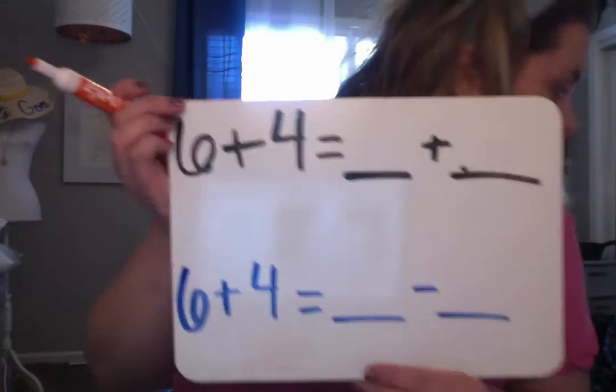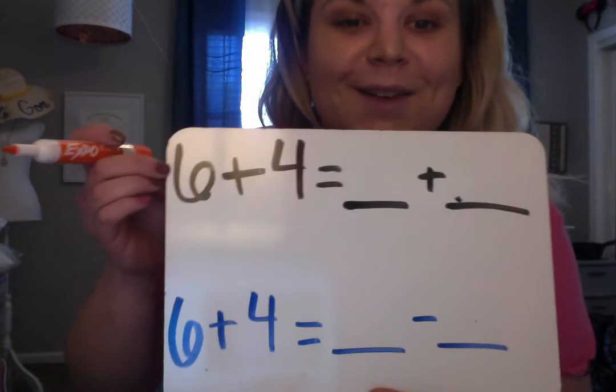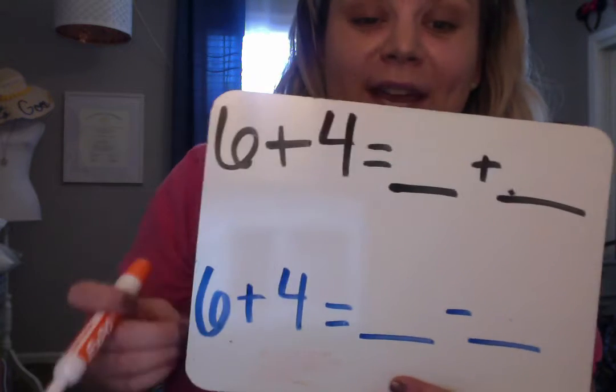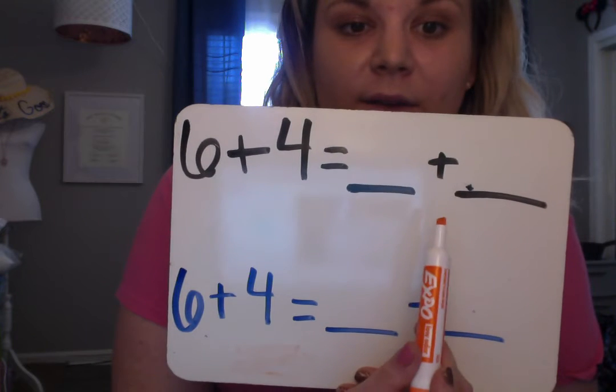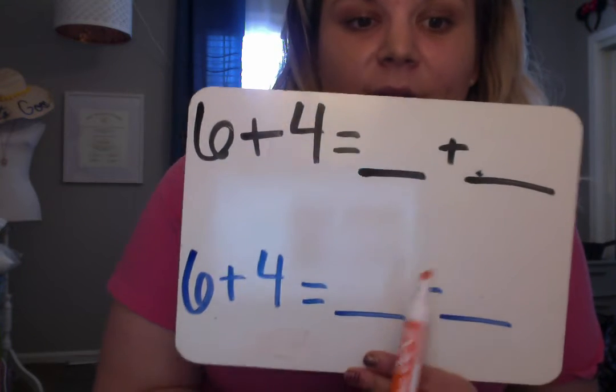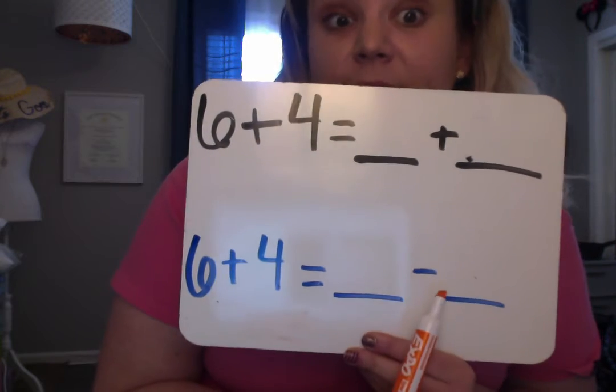So here, Rhett's making sounds while I work. Here I have the same equation on both sides and they're both addition, right? But this one, we need to balance it with addition. This one, we're going to balance it with subtraction.